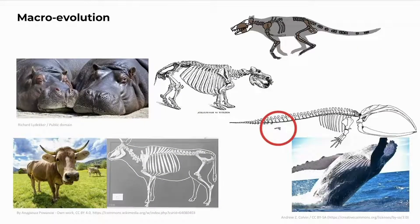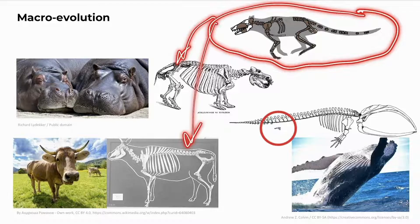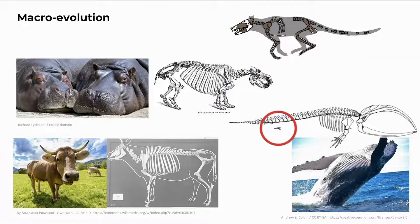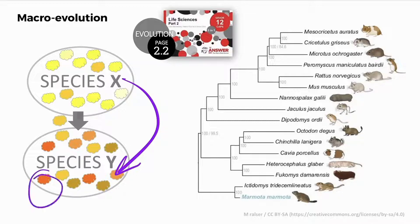The skeleton of a common ancestor must undergo changes to form each of the species over time so that they are adapted to their own environments — all based on favourable mutations and natural selection. Macroevolution always involves change between species, from species X to species Y by speciation. In this case, species Y individuals cannot interbreed with individuals from species X and cannot produce fertile offspring.